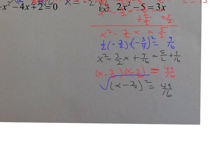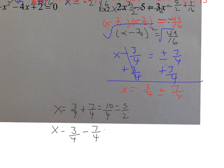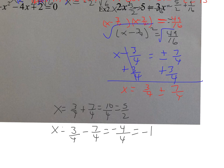Square rooting both sides, x minus 3 fourths equals plus or minus 7 fourths. Adding 3 fourths to both sides: x equals 3 fourths plus or minus 7 fourths. So x equals 3 fourths plus 7 fourths equals 10 fourths, which is 5 halves, and x equals 3 fourths minus 7 fourths equals negative 4 fourths, which is negative 1. When you get an integer and a fraction as answers, that means the original quadratic was actually factorable — and this confirms completing the square was not the best method due to the fractions.